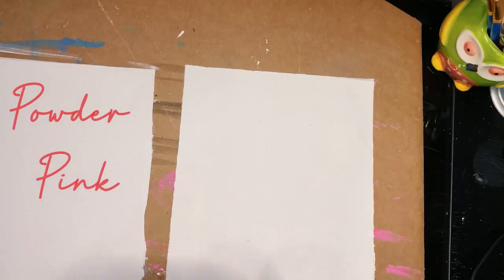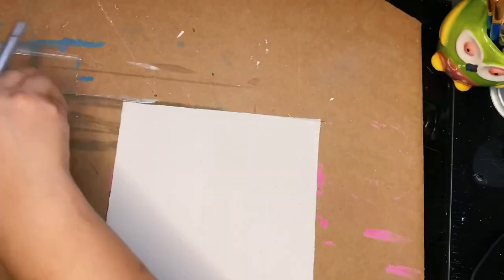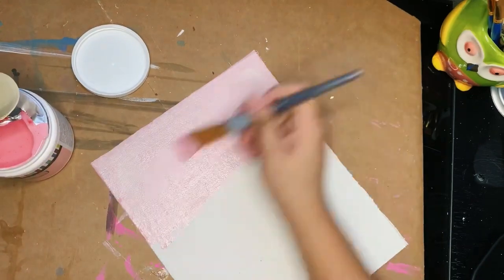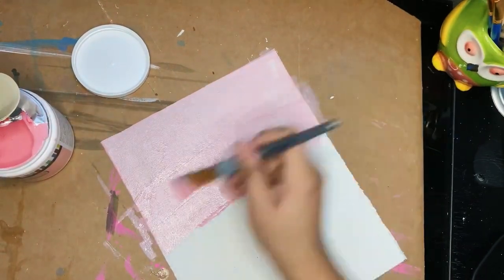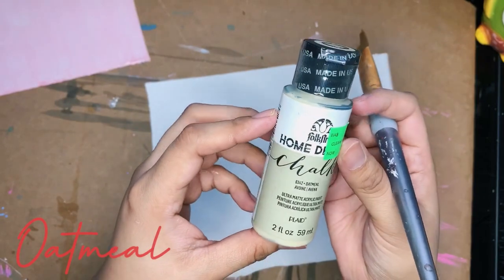I'm now ready to paint. The first color I will be using is Powder Pink. This is what I had at home, but you can use any acrylic paint for this part. The second color I'm using is Oatmeal in Chalk Paint.